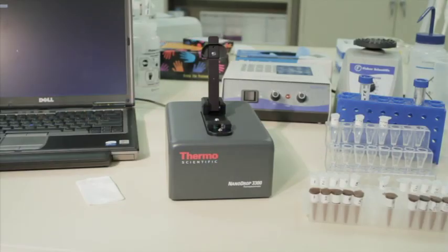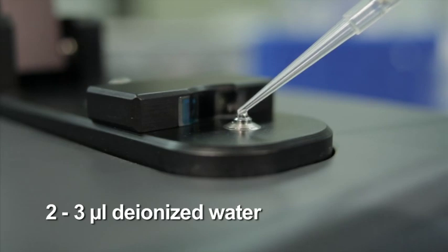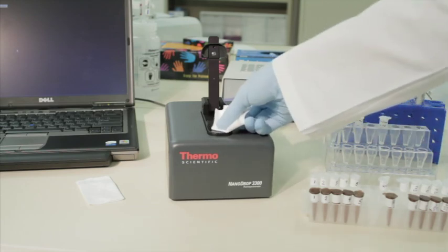To prepare the instrument and perform measurements, first clean the lower and upper surfaces of the sample retention system. Pipet 2 to 3 microliters of deionized water onto the lower optical surface. Close, then open the lever arm, and blot the upper and lower pedestals with a clean, lint-free laboratory wipe.